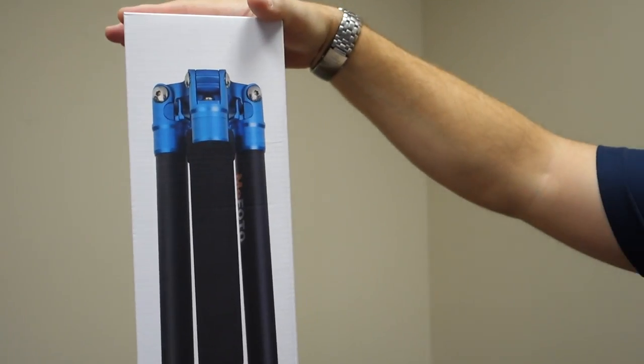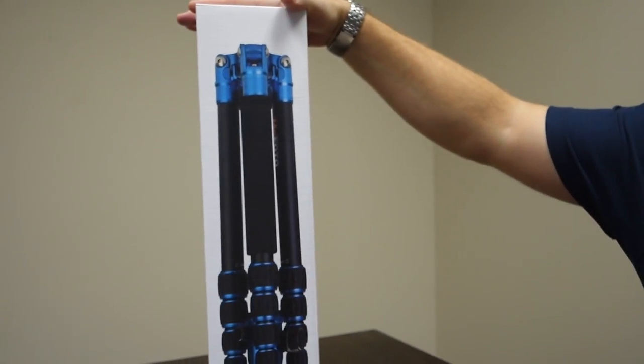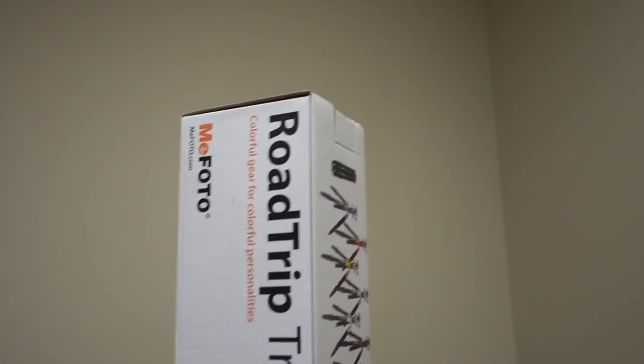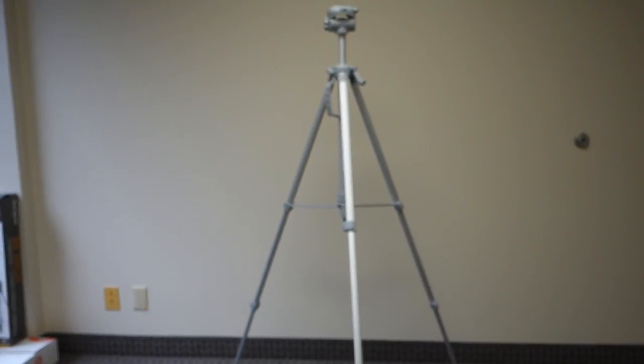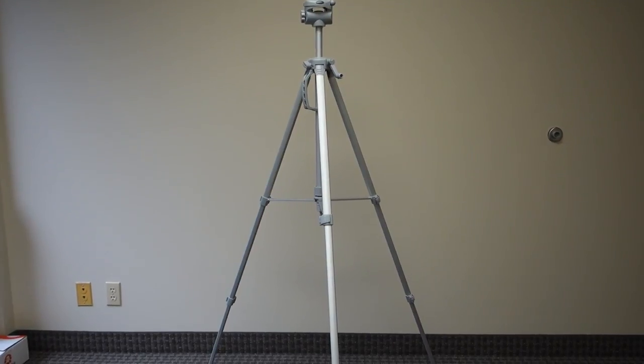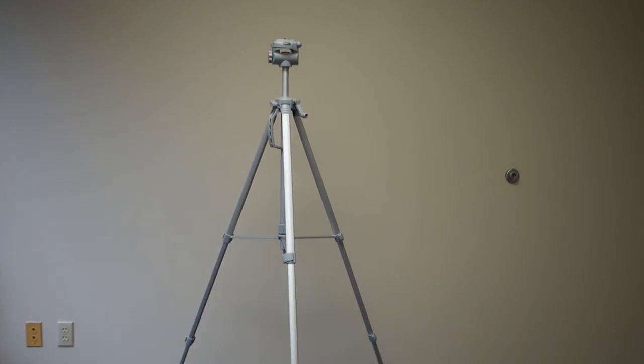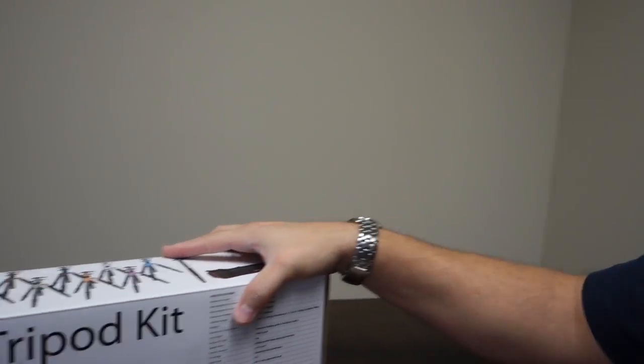So we currently use this thing, the Targus, it's a 66 inch plastic tripod. And we are going to replace it with this big bad mama jamma called the Roadtrip tripod kit. Pretty simple, it's a pretty neat little thing. It will give us a little bit more stability that we need. Kind of worry about plastic.